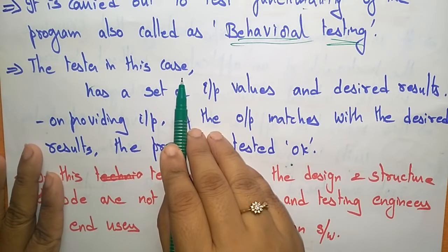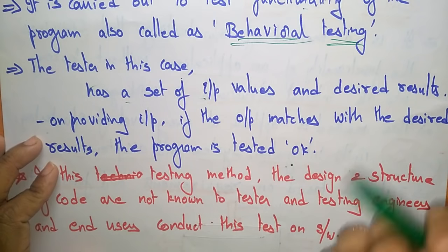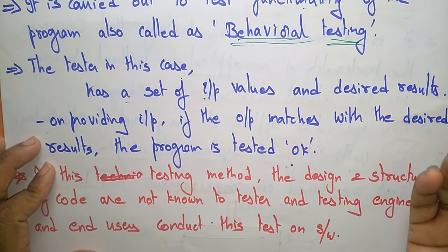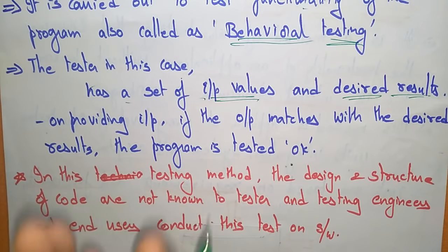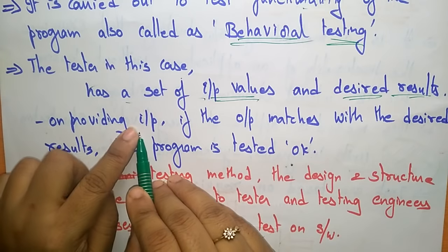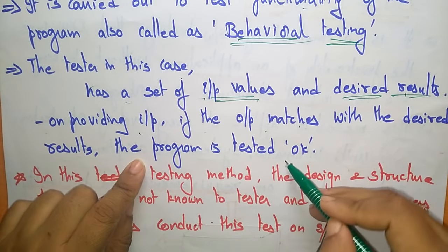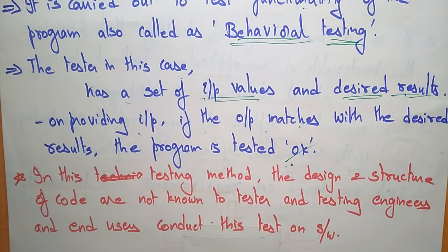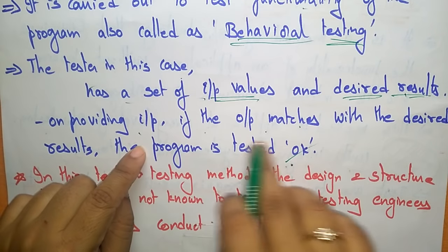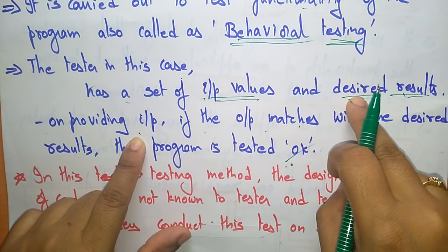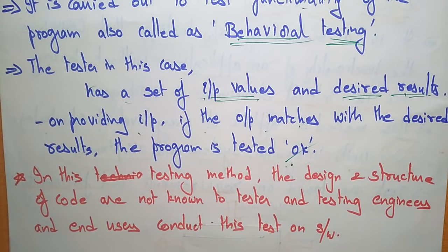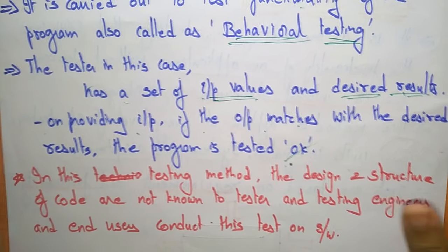The tester — whether a customer or developer — has a set of input values and desired results. They provide the input values, and if the output matches the desired result, the program is considered correctly tested. If the output does not meet the desired result, then the program has an error. That is the exact procedure of black box testing.